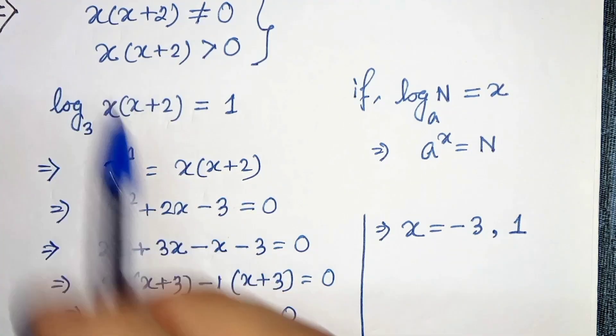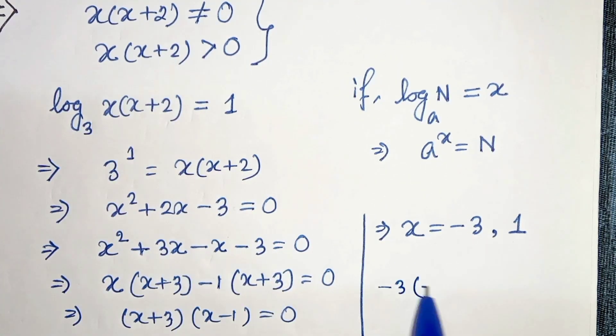And if we put minus 3, then we will get minus 3 times minus 3 plus 2, which is minus 3 times minus 1, which is 3.